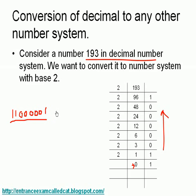Reading the remainders from bottom to top gives 11000001. You may feel that this is a huge number compared to 193, but in 193 the base was 10 whereas here the base is 2. So the magnitude of the number may seem large, but in fact both are the same value — only the base is different, so the digits have changed.